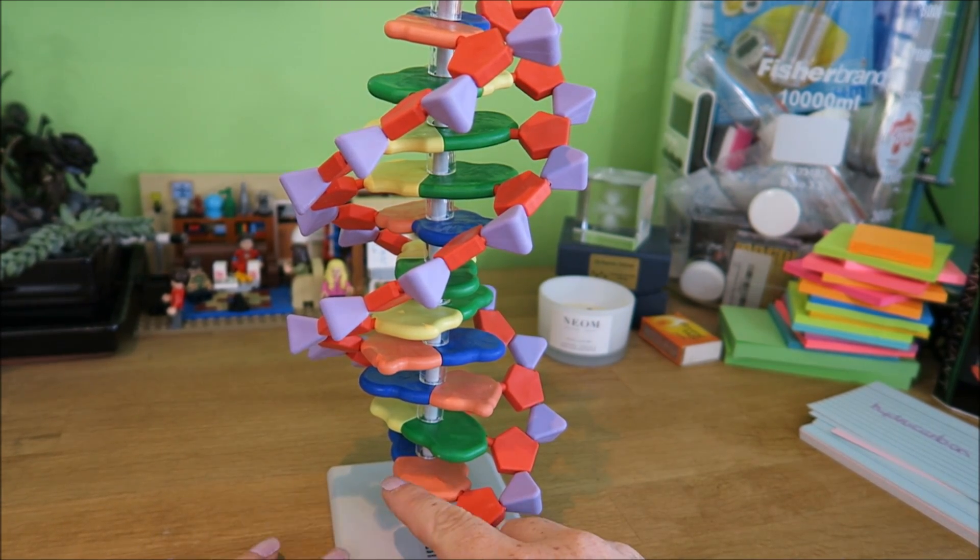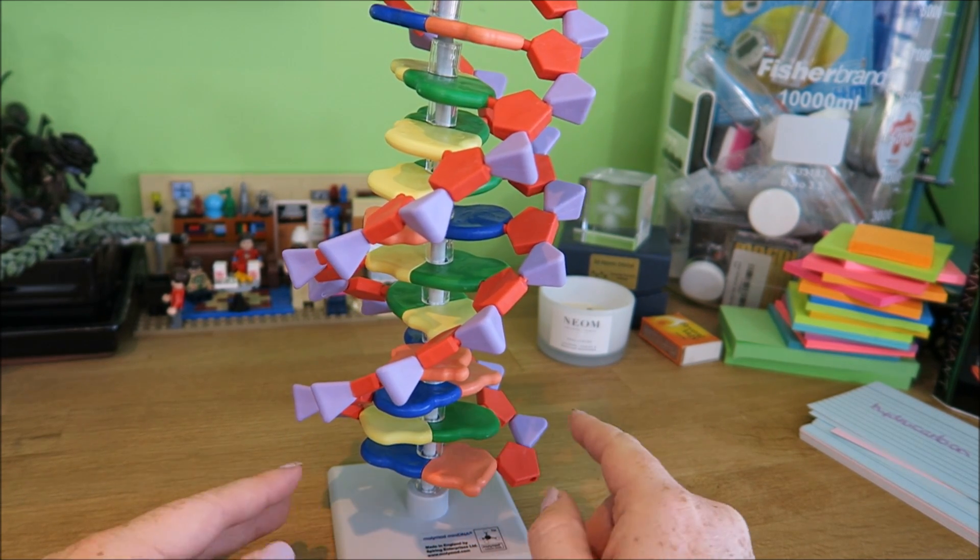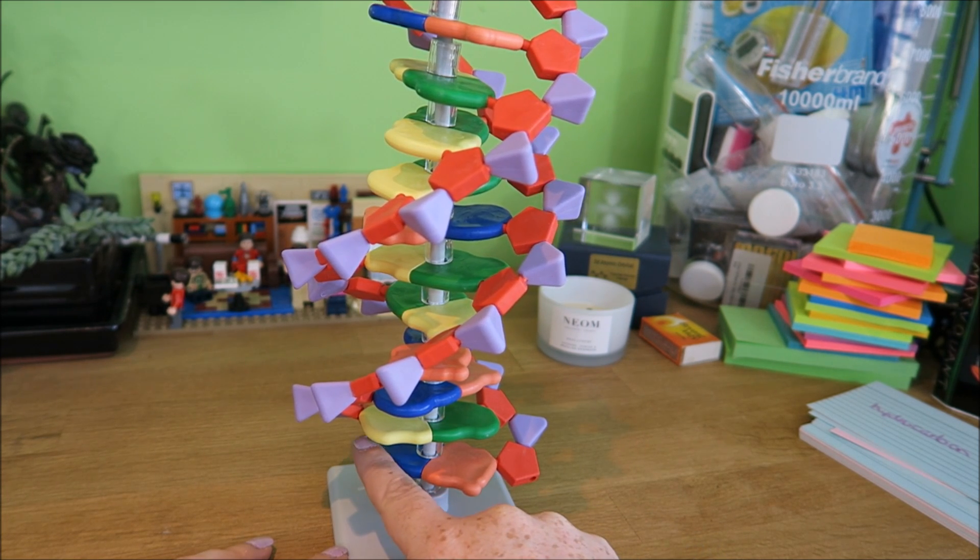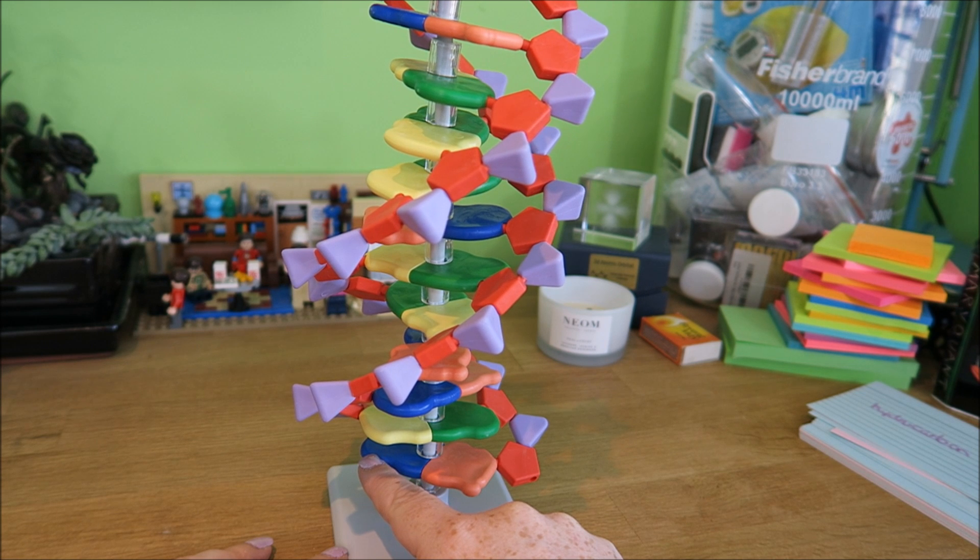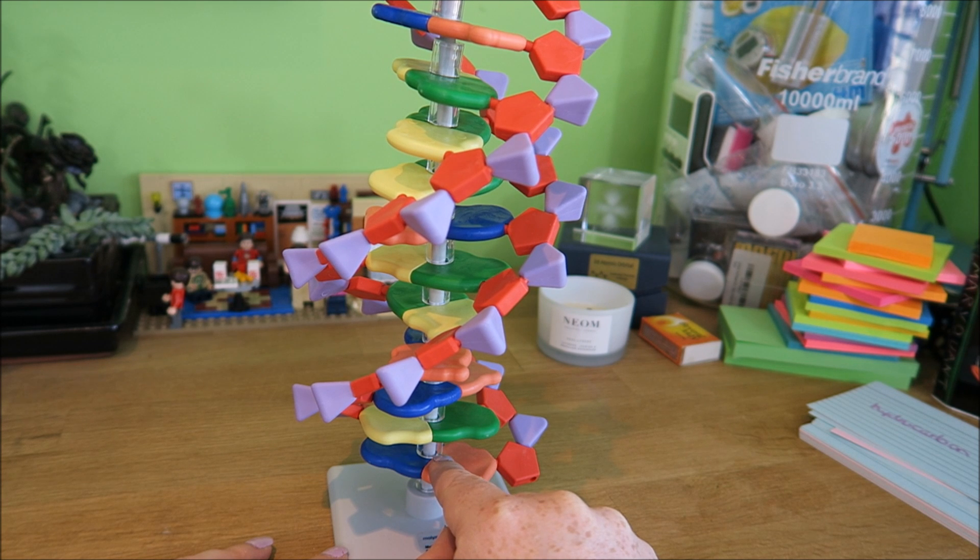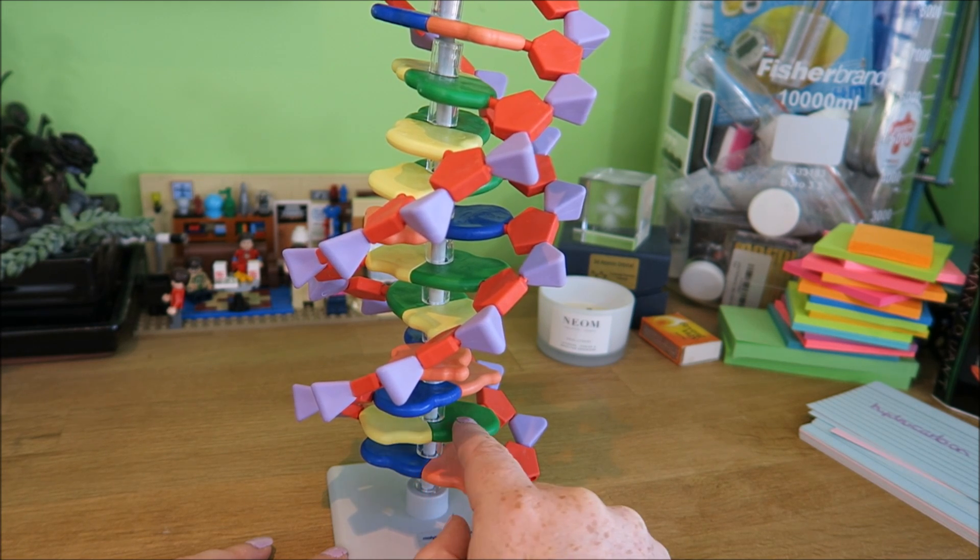Now you can see on our DNA that we have these different color bits here. These are the bases. There are four different bases in DNA: A, T, C, and G. So here we have T, which is orange, and this is going to be bonded with A, which is blue. So A and T always go together, and C and G always go together as well.